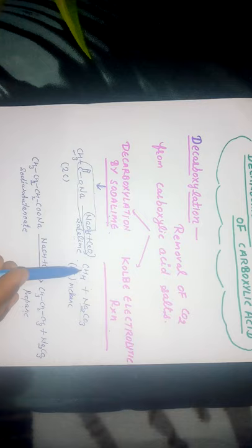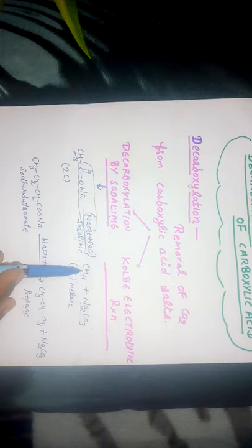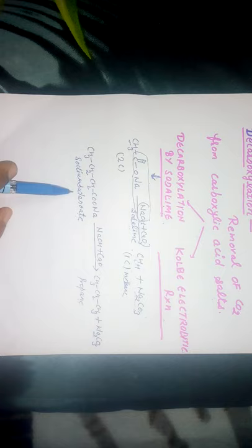The product has one less carbon than the reactant because CO2 is released — this reaction involves reduction in carbon number. For example, if we take sodium butanoate, the product will be propane.